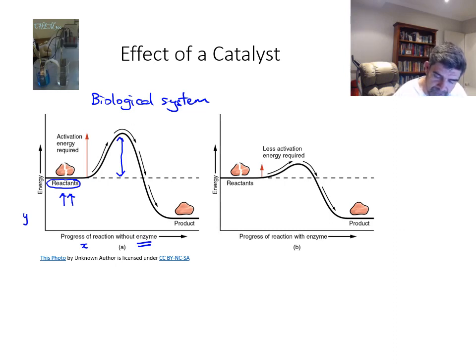You'll notice too that in this particular example, when we do form our products, we have a delta H value which would be negative, because the products are at a lower energy value, energy of the products lower than the energy of the reactants.